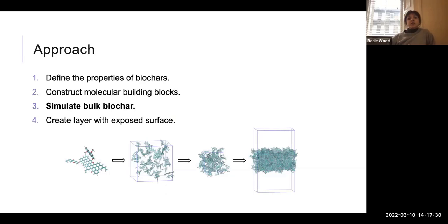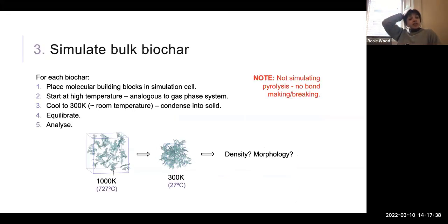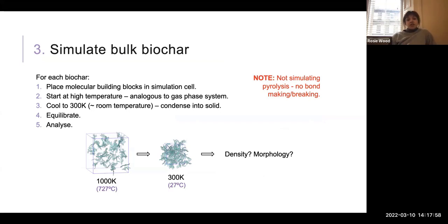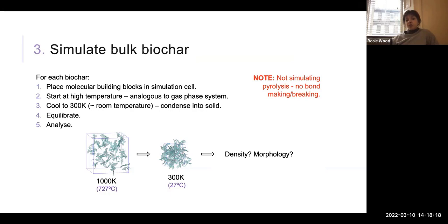The next thing I did was simulate my bulk biochars — the one which is periodic in X, Y and Z. I did this essentially by placing each of my molecular building blocks into a simulation cell and then starting a simulation at a high temperature, meaning the molecular building blocks were gaseous and could move around freely. I then cooled the simulation down to room temperature, and this meant all of my molecular building blocks condensed into essentially a solid. I then analyzed my output configuration — looking at density and morphology to check that my structures were representative. I should note that I'm not simulating pyrolysis because there's no bond making or breaking; I've just put in input molecules representative of the biochars and condensed them into a solid.